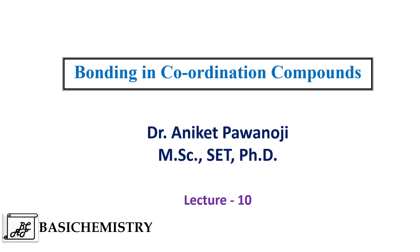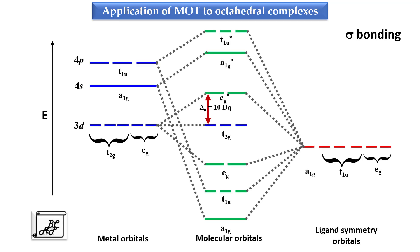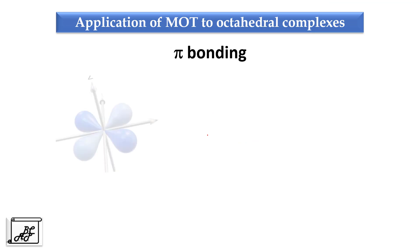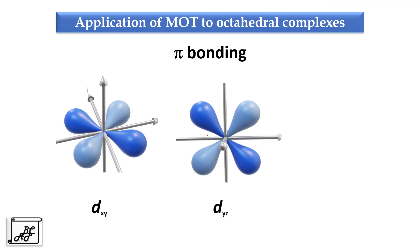When we apply molecular orbital theory to octahedral complexes consisting only sigma bonding, this is the molecular orbital diagram. In this diagram we have seen that eg, a1g and t1u orbitals of metal as well as ligand overlap with each other to form bonding and anti-bonding molecular orbitals. Among these, the t2g orbitals of the metal do not have symmetrical orbitals to overlap with them, and therefore these t2g orbitals remain non-bonding and are available for pi bonding. These t2g orbitals are actually dxy, dyz and dxz.